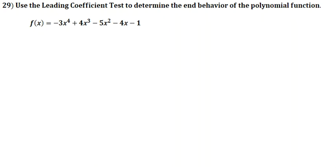We're looking at question 29, and it's asking us to use the leading coefficient test to determine the end behavior of the polynomial function. We are given the function f(x) = -3x⁴ + 4x³ - 5x² - 4x - 1.